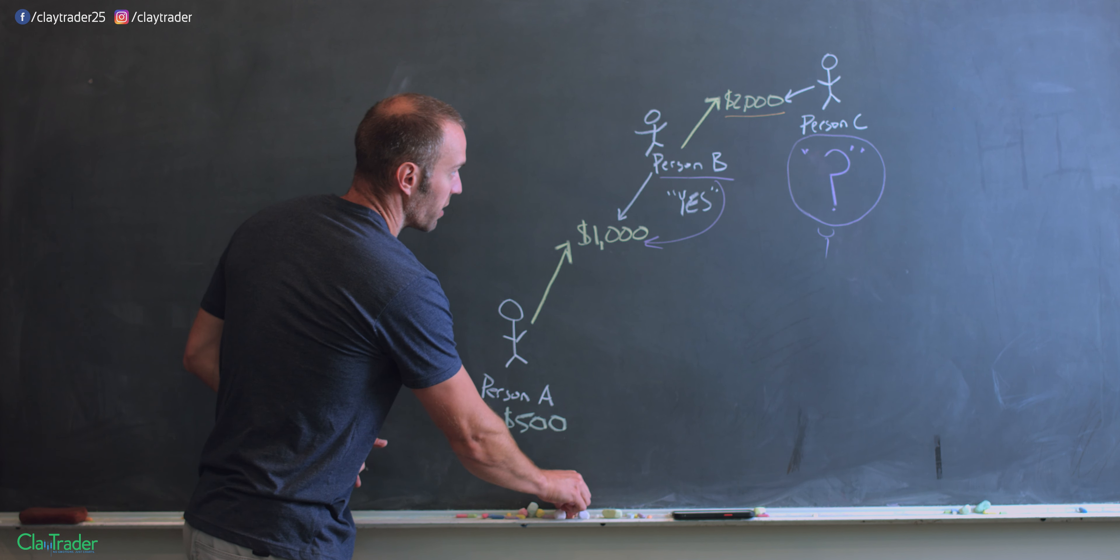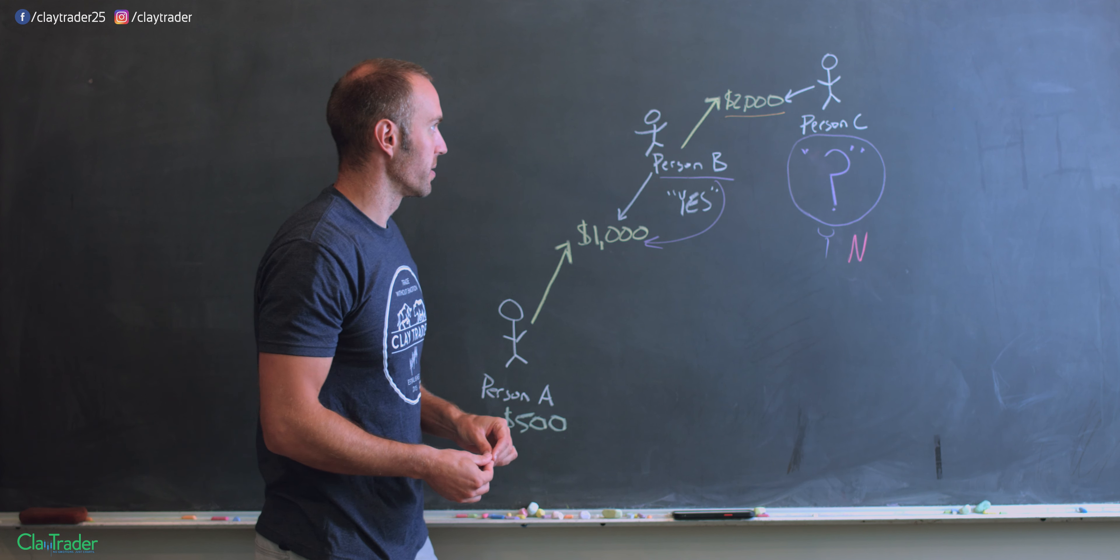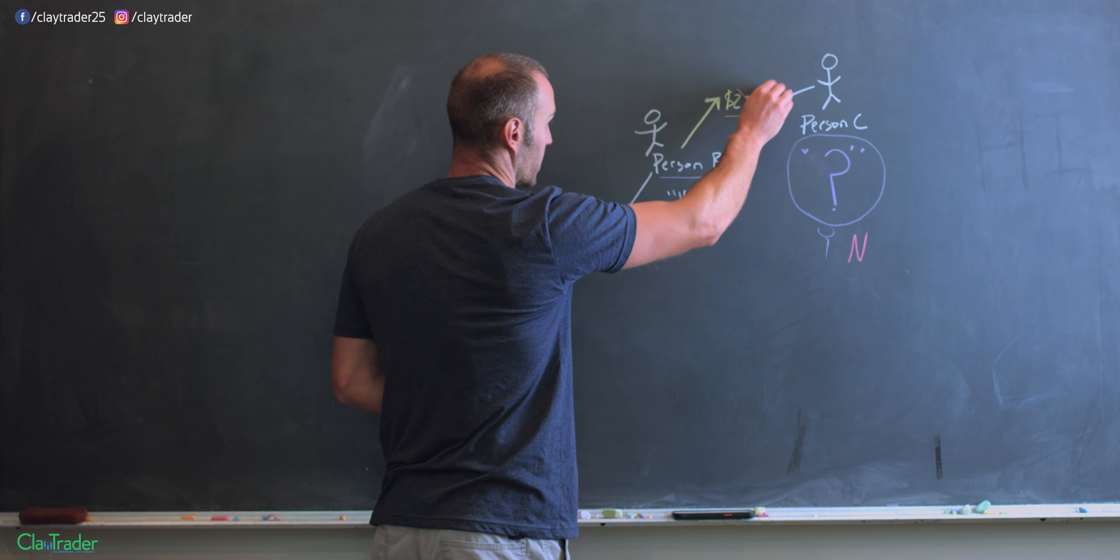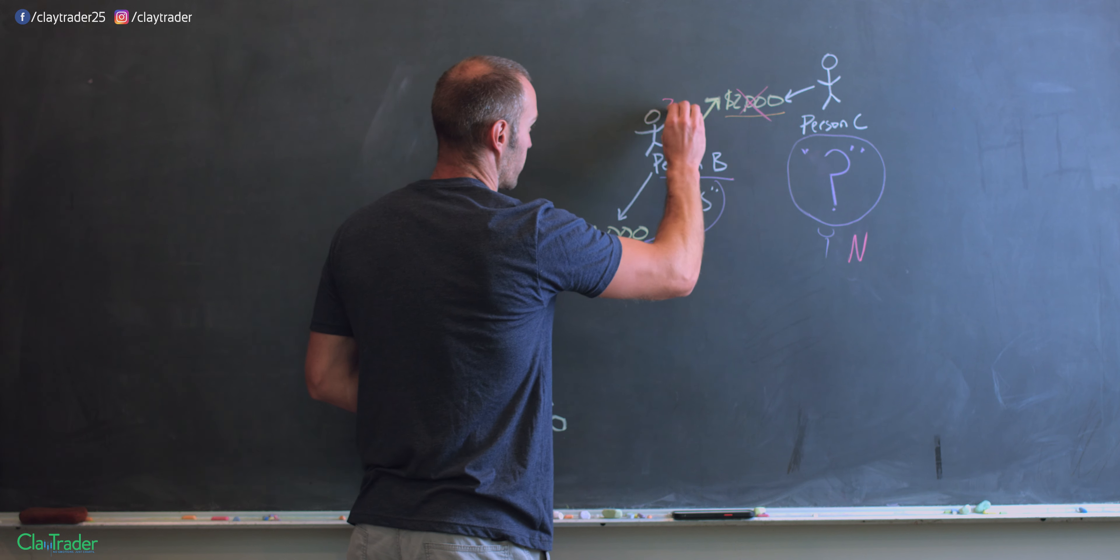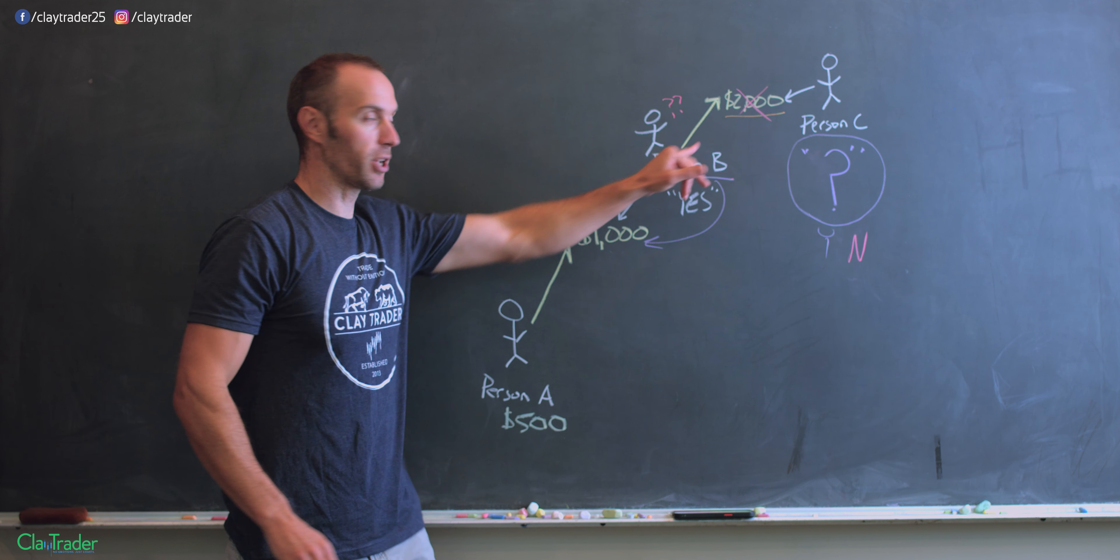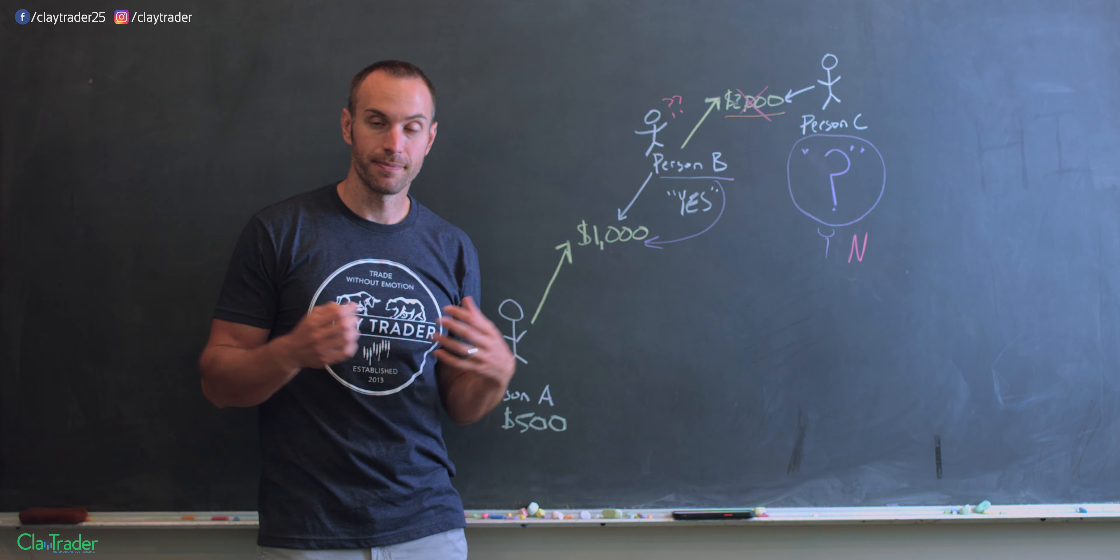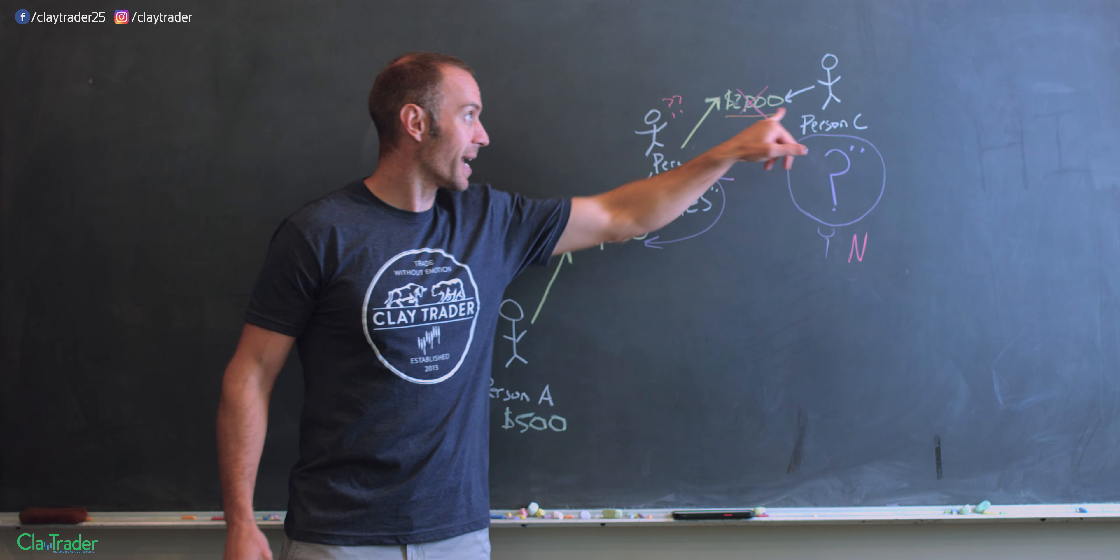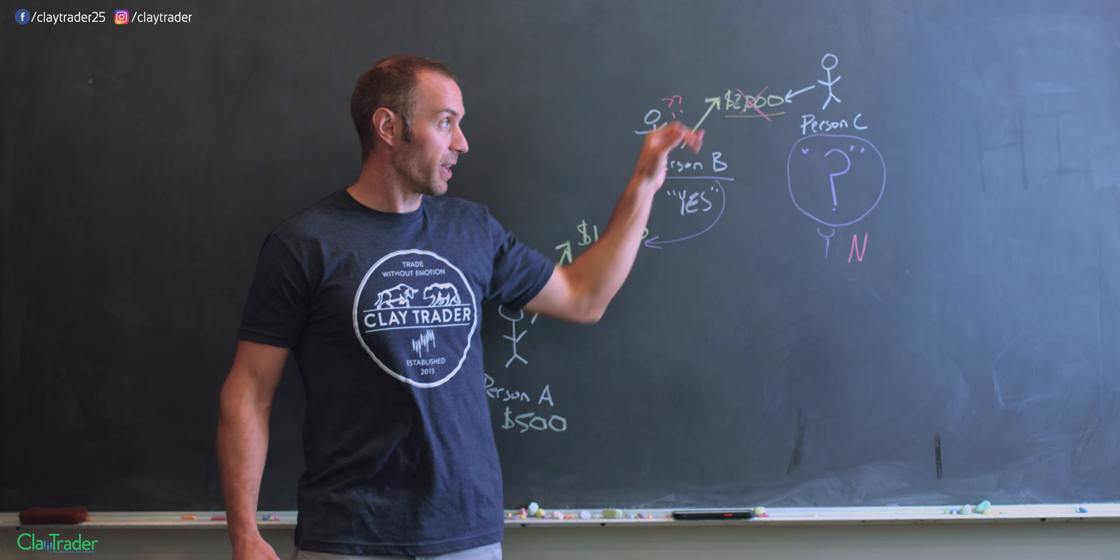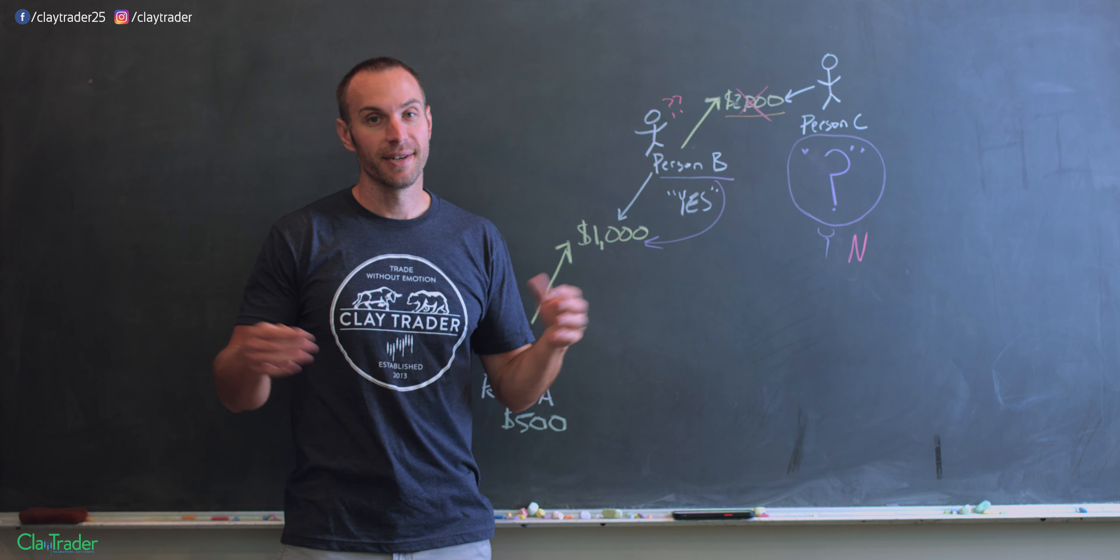But on the flip side, if person C is like, no, no, no, don't care, well then, guess what? That's not happening. And person B is sitting here saying, uh-oh, I thought somebody was gonna be willing to buy it at a higher price than what I purchased it for. Well, guess, they chose wrong. They did not read person C properly. If they thought person C was gonna say, yep, I'll buy, and then person C says, nope, uh-oh.